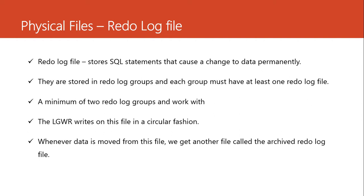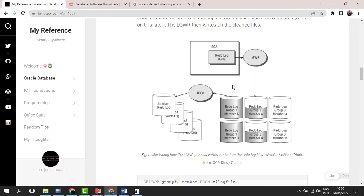The log writer writes to this file in a circular fashion. Looking at the diagram borrowed from the Oracle documentation, it shows how the log writer writes to the redo log files. The redo log files are stored in redo log groups — this is the database. The files are stored in redo log groups; you can see redo log group one, two, three, and so on. The redo log buffer stores SQL statements that cause a change.